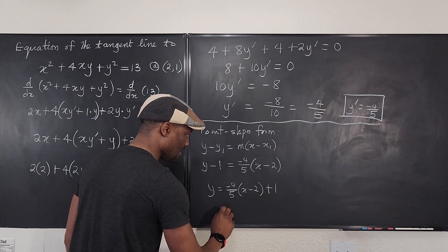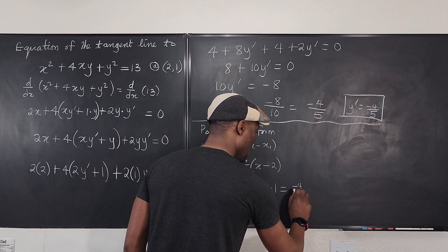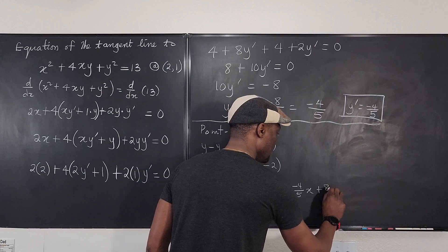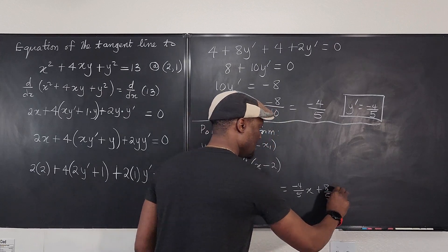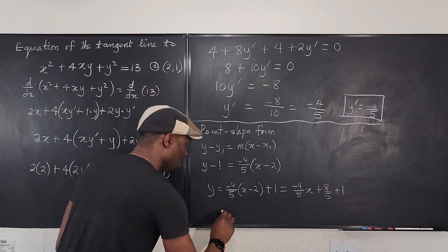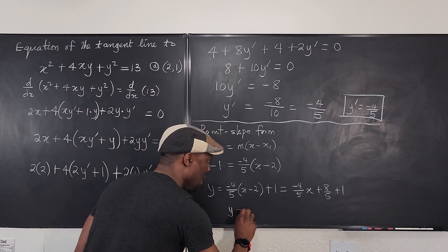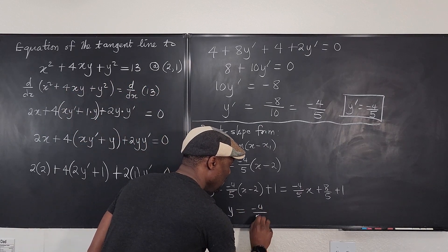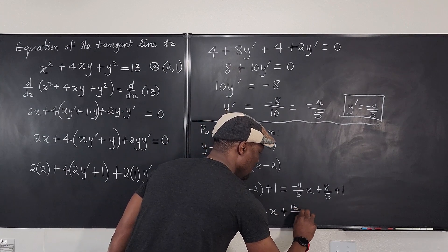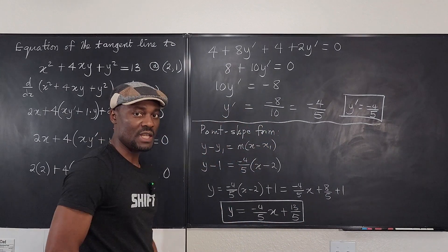This is equal to negative 4 over 5x. This times this will be plus 8 over 5 plus 1. I know that this is going to give me 13 over 5, so that the equation of the tangent line to this curve at this point will be y equals negative 4 over 5x plus 13 over 5. And this is what you need.